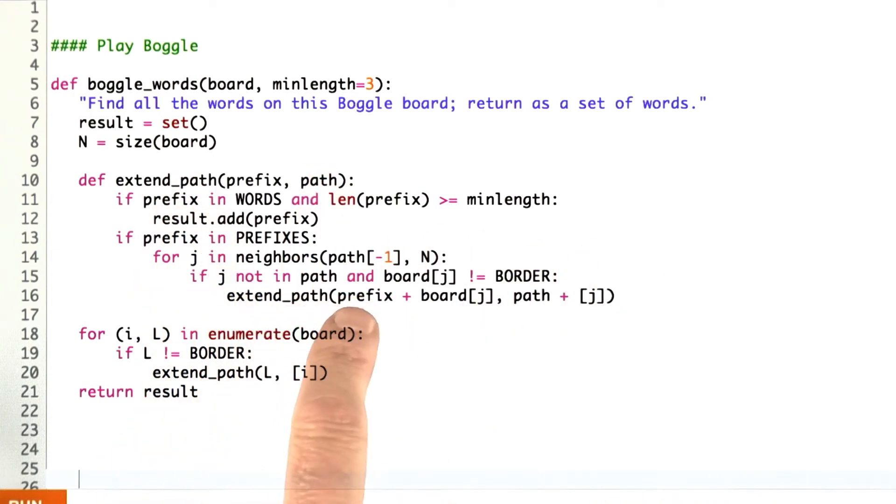And this is similar to the structure of find_words, but it's constrained to looking on the board through the neighbors. So what do I do?